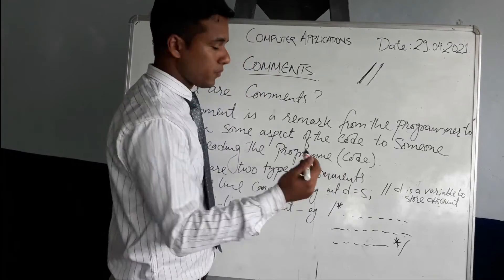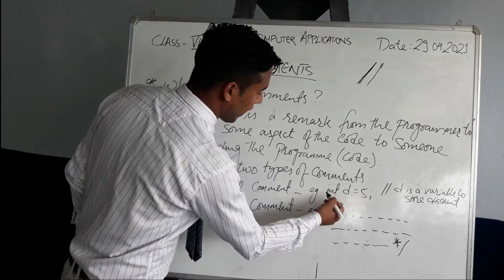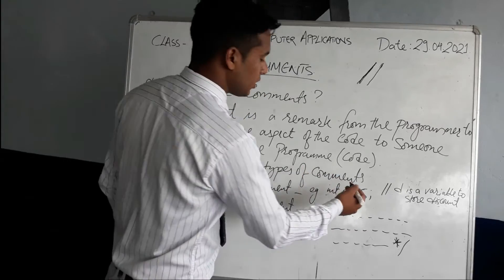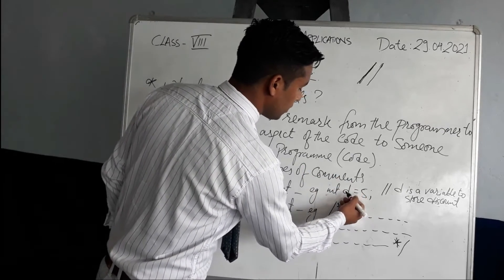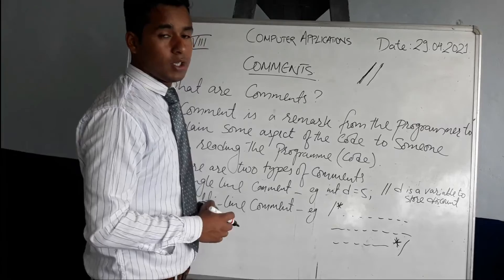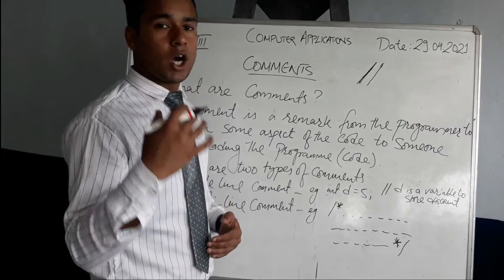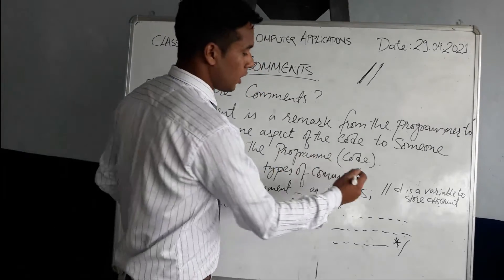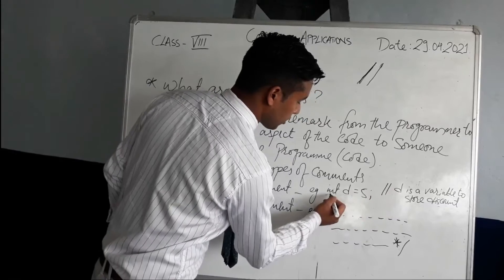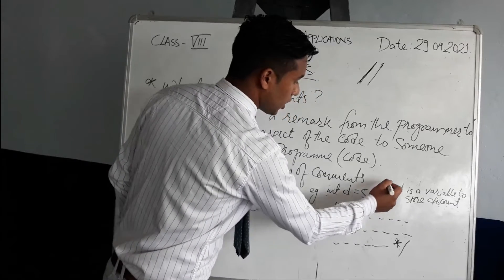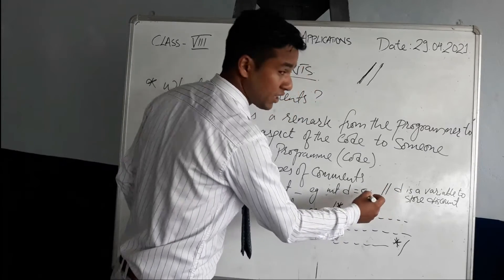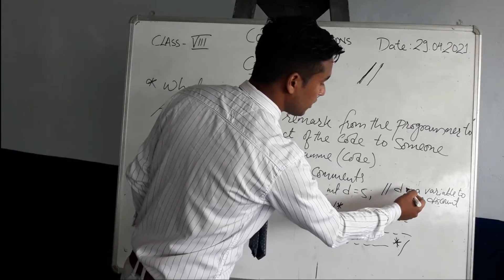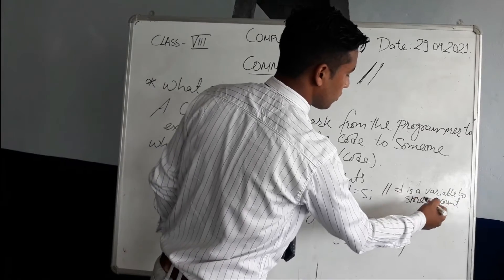Here a data type int has been used, and variable d equals five, meaning variable d is storing the value five. To use a comment for this particular program segment, the single-line comment symbol is double forward slash. So we write: // d is a variable to store discount.